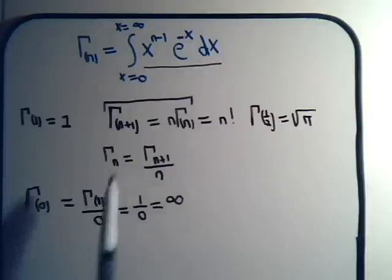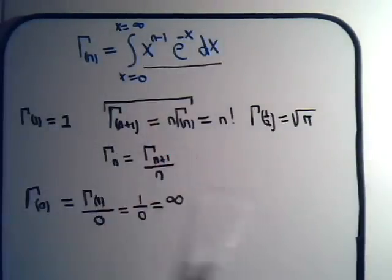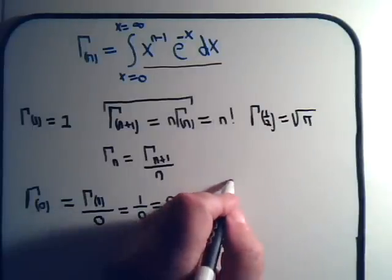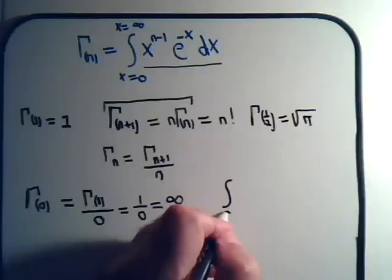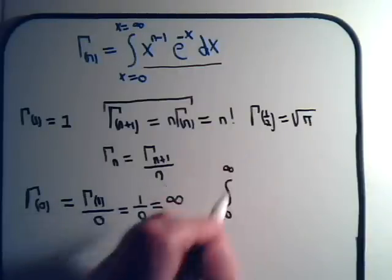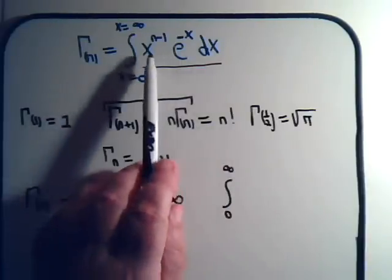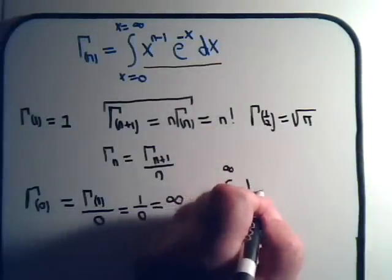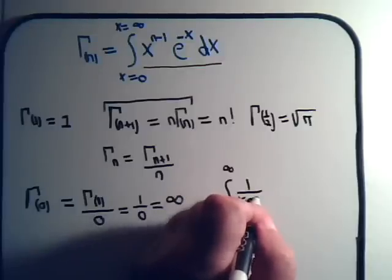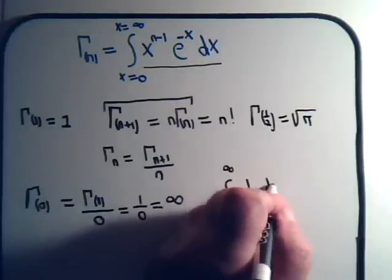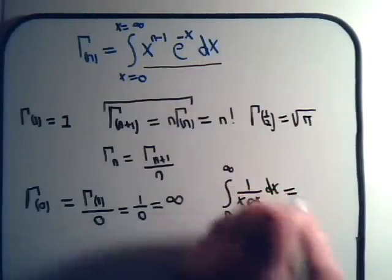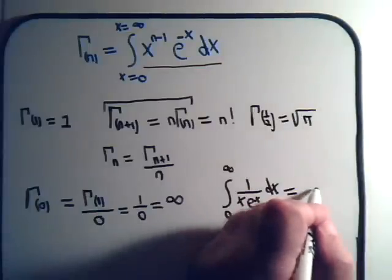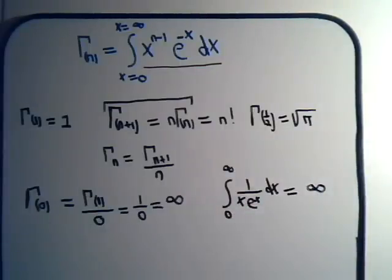Let's go back and look at our definition. The gamma function of 0 means n is 0, so the integral from 0 to infinity is x to the minus 1 times e to the minus x, which we can write as 1 over x times e to the negative x dx. We know right away that's an improper integral — we just proved that with these simple steps.